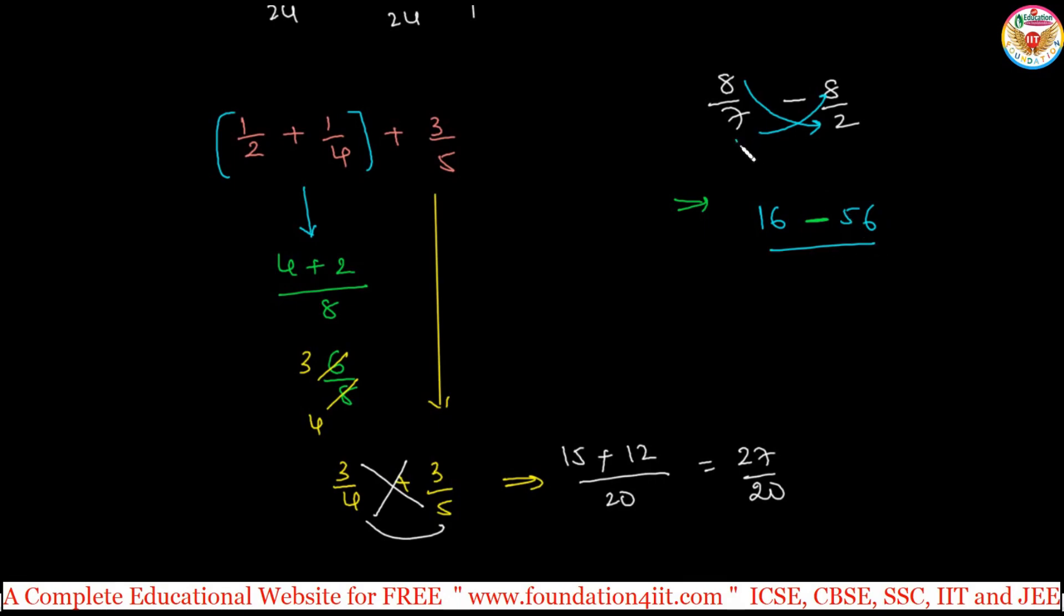By denominators you multiply, 7 into 2 is 14. 16 minus 56, so this is minus 40 by 14. Try to simplify: 2 table, 2 into 7 is 14, so minus 20 by 7.